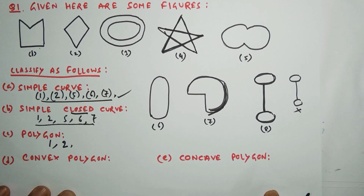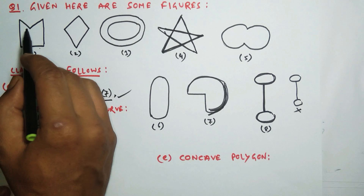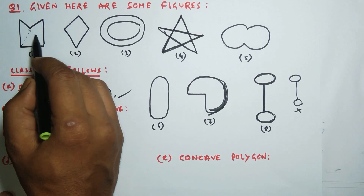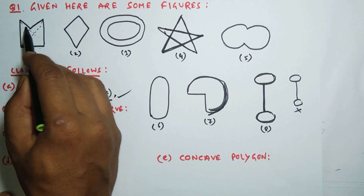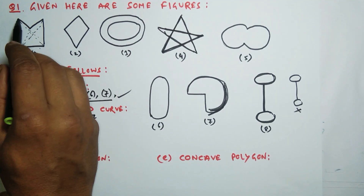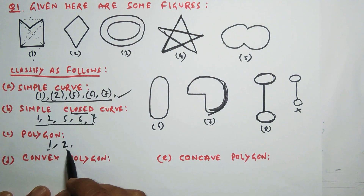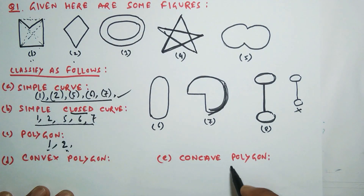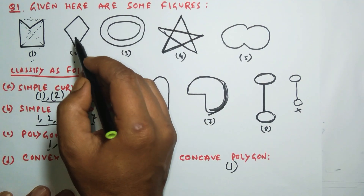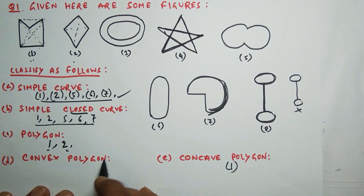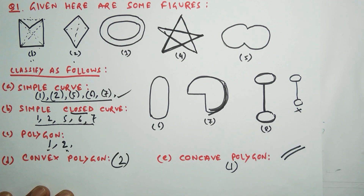Now out of the two polygons, one and two, which is convex and which is concave? For polygon one, if I draw the diagonals — line segments joining non-adjacent vertices — some diagonals go inside, but if you join certain non-adjacent vertices, the diagonal goes outside. If a diagonal goes outside, it is a concave polygon. So polygon one is a concave polygon. For polygon two, all diagonals lie inside, so polygon two is a convex polygon.